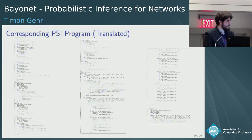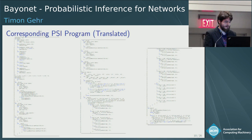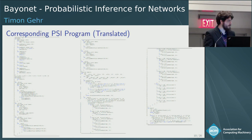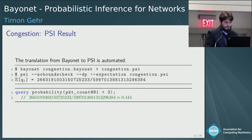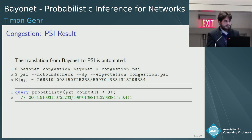This is the corresponding C program, automatically translated. The font may be small, but this is just straightforward code that simulates the behavior of the network. In the beginning we have data type declarations defining what the queue is, then data type declarations for the individual switches, and finally simulation code that probabilistically selects the next action to execute — running a local node program or forwarding a packet along a queue. In the very end, we return whether all packets arrived. We run Bayonet to get the C program, then run Psi on the resulting program to get the exact probability of not all packets arriving.